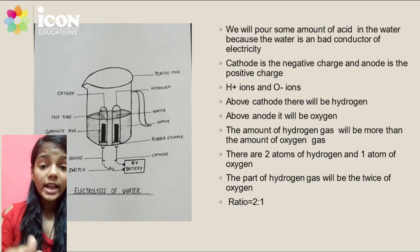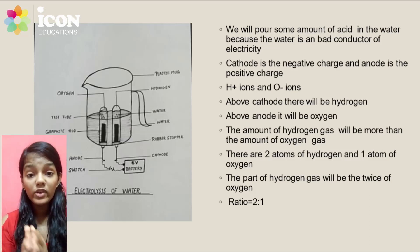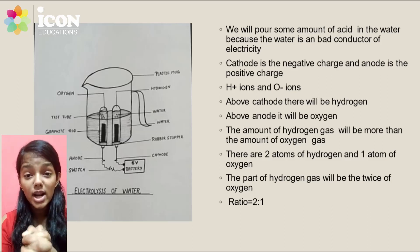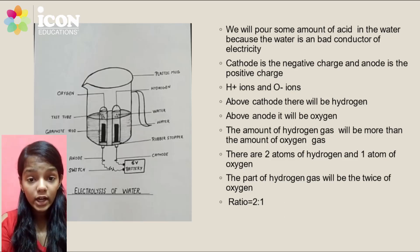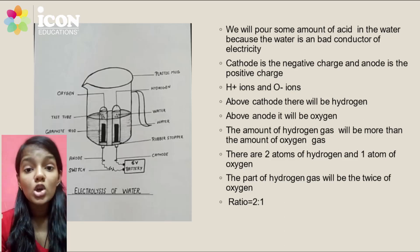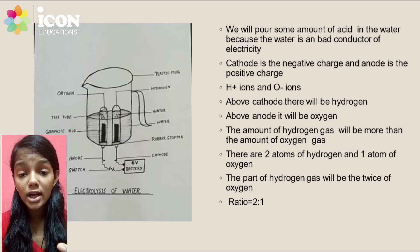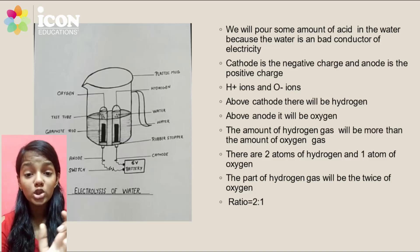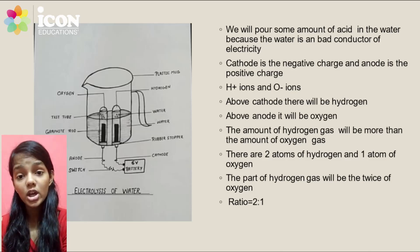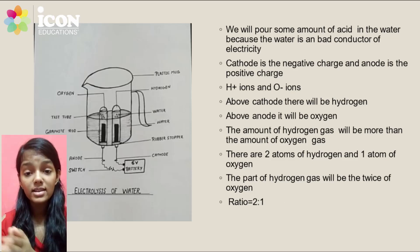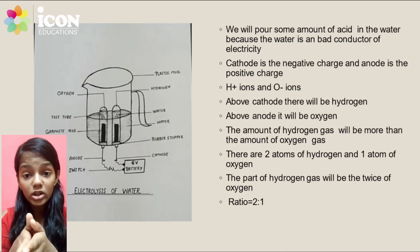Hydrogen is H-plus, meaning it carries a positive charge, and oxygen carries a negative charge. As we know, unlike charges attract each other. Since cathode is negatively charged and hydrogen is positively charged, hydrogen will be attracted to the cathode. And since anode is positively charged and oxygen is negatively charged, oxygen will be collected at the anode. After this process, we will see that the volume of hydrogen gas collected is double the volume of oxygen gas collected.